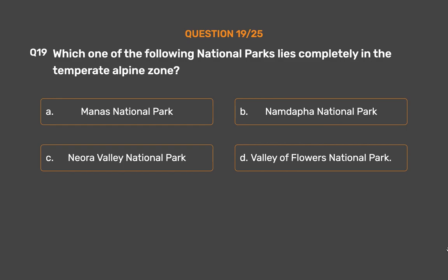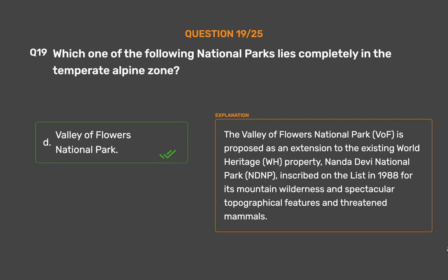The correct answer is Option D: Valley of Flowers National Park. The Valley of Flowers National Park is proposed as an extension to the existing World Heritage property, Nanda Devi National Park (NDNP), inscribed on the list in 1988 for its mountain wilderness, spectacular topographical features, and threatened mammals.